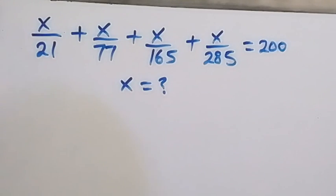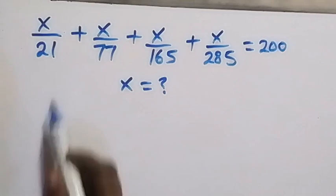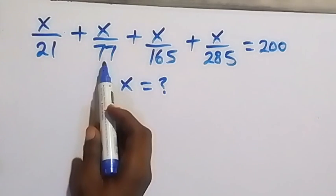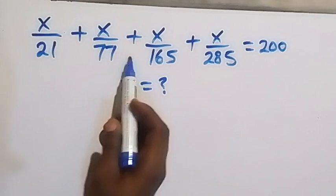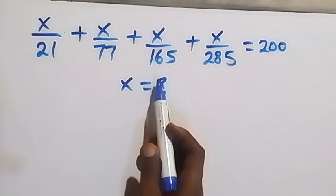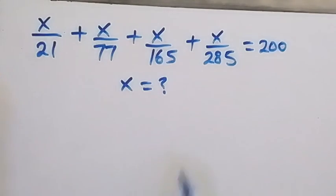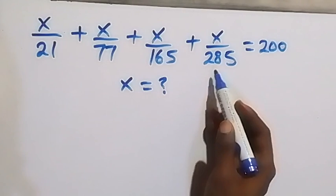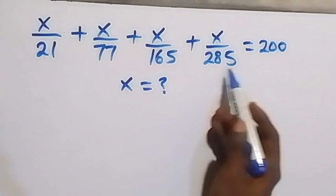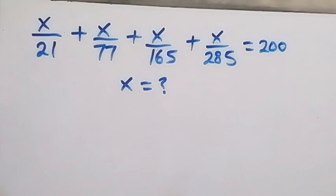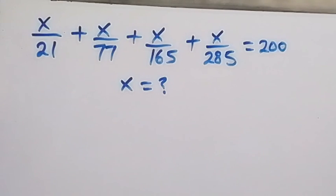Hello, you are welcome. Given that x over 21 plus x over 77 plus x over 165 plus x over 285 equals 200, find the value of x.